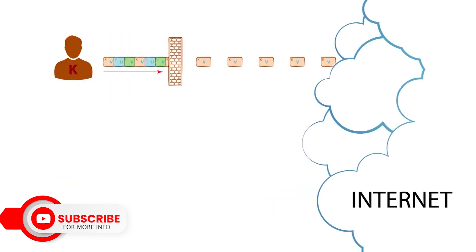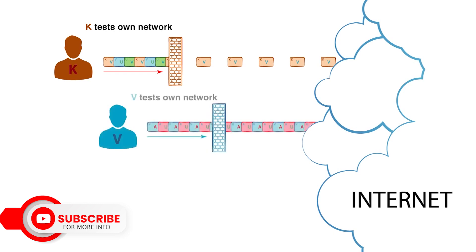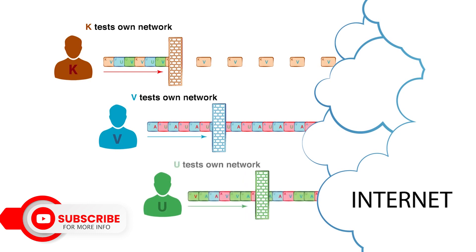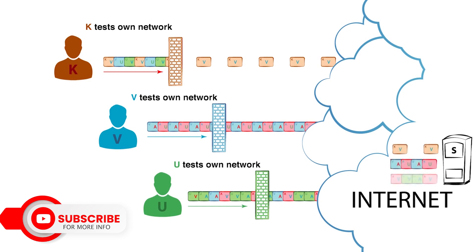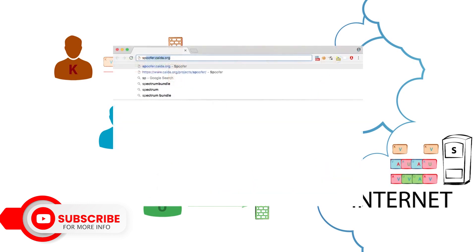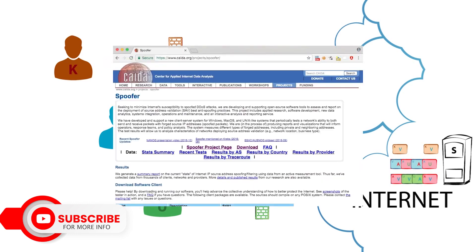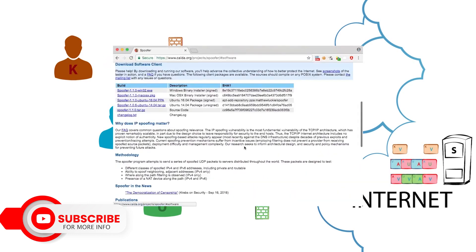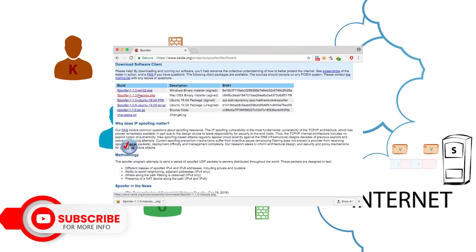We have some important considerations. Choose reputable services — when using VPNs or proxies, make sure to choose reputable services to ensure privacy and security. You should also understand limitations: while these methods can help protect your privacy, they might not make you completely anonymous. Be aware of the limitations and potential risks associated with each method.